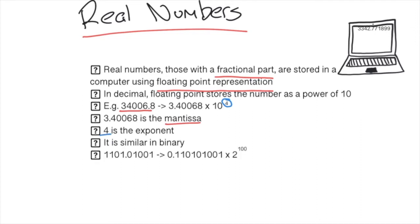This is similar in binary. You can see in the example below, the first number 1101.010001 can be converted into a floating point representation number. This would result in it being 0.110101 and so on times 2 to the power of 100. The times 2 reflects that it's a binary number rather than a decimal number, because we are using two numbers only—zero and one—rather than ten numbers in decimal. The exponent at the top is 100, which represents 4 in binary, because the decimal point has moved four places.